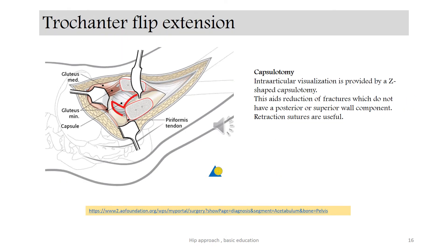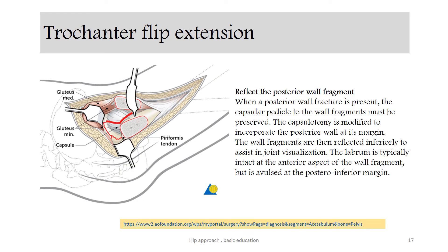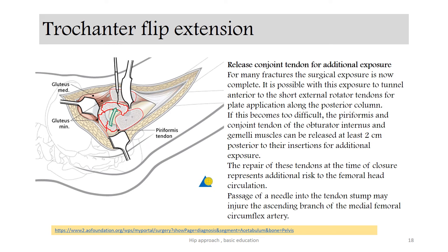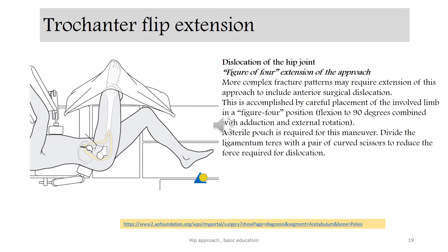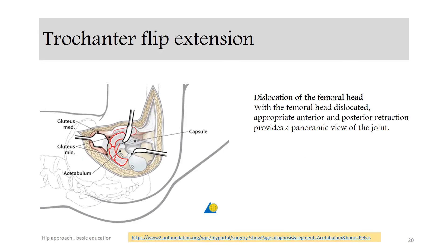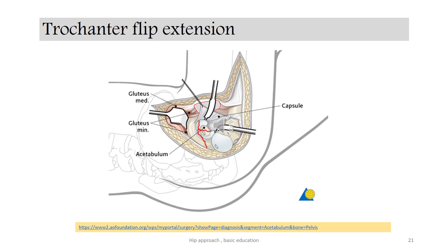We can now make a capsulotomy — perform a Z-shaped capsulotomy. We can now dislocate the hip joint to the anterior side. The figure-of-four position is very crucial to know. We need a sterile post in front of the patient. If needed, the ligamentum teres should be divided. Carefully look at the Hohmann retractors and identify the placement of the other retractors and anatomical structures.